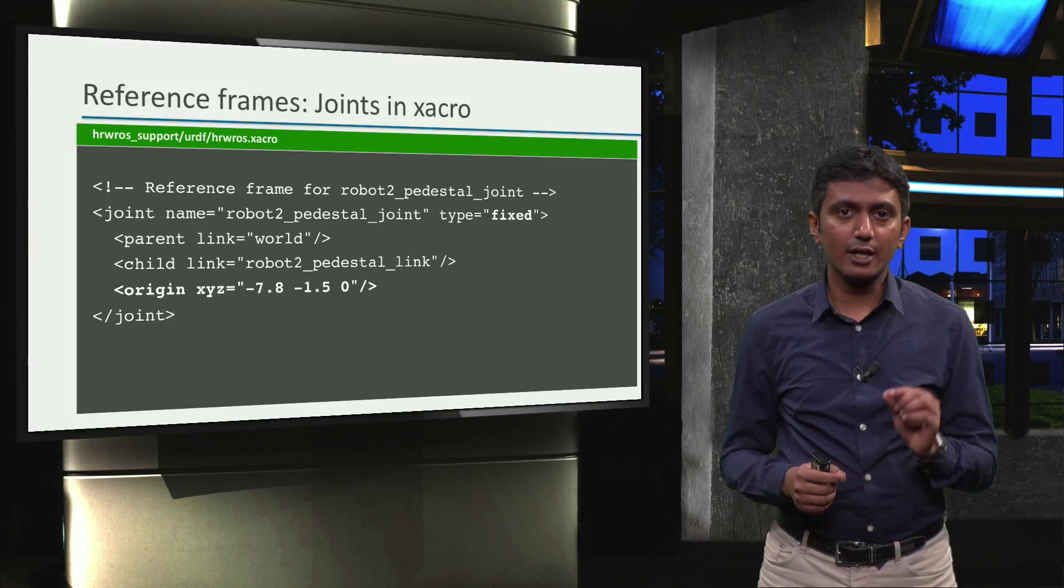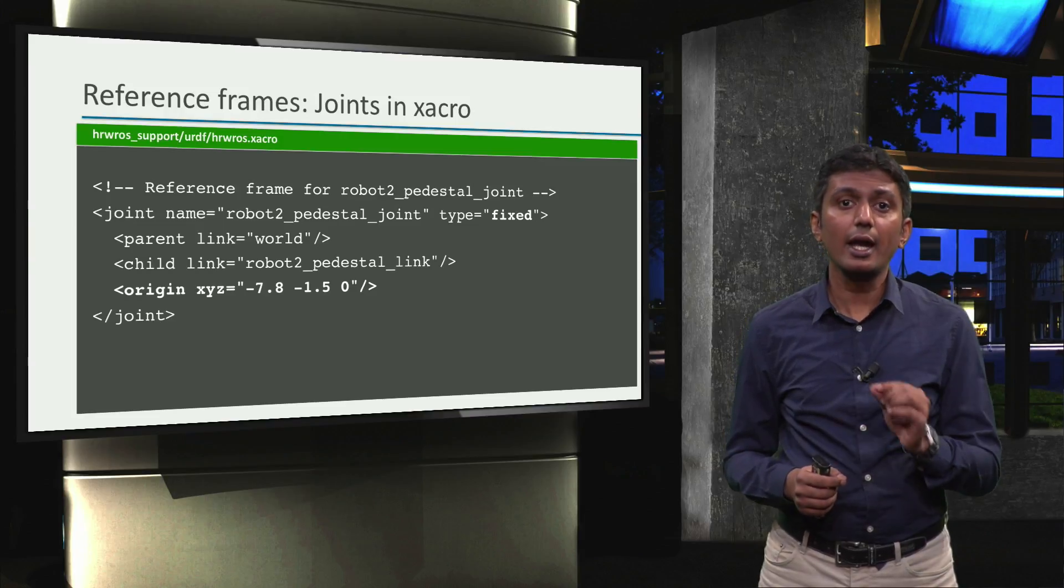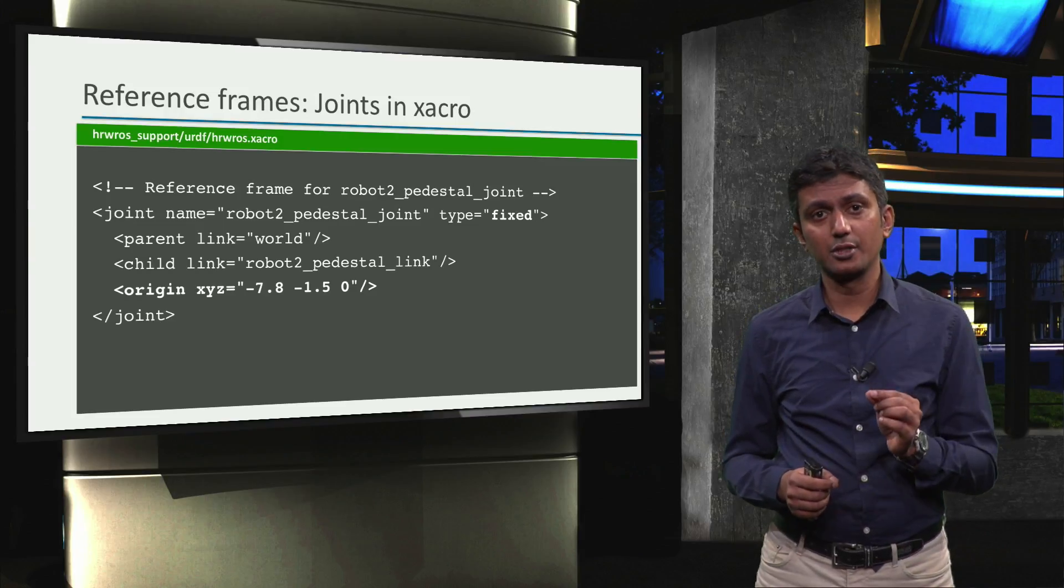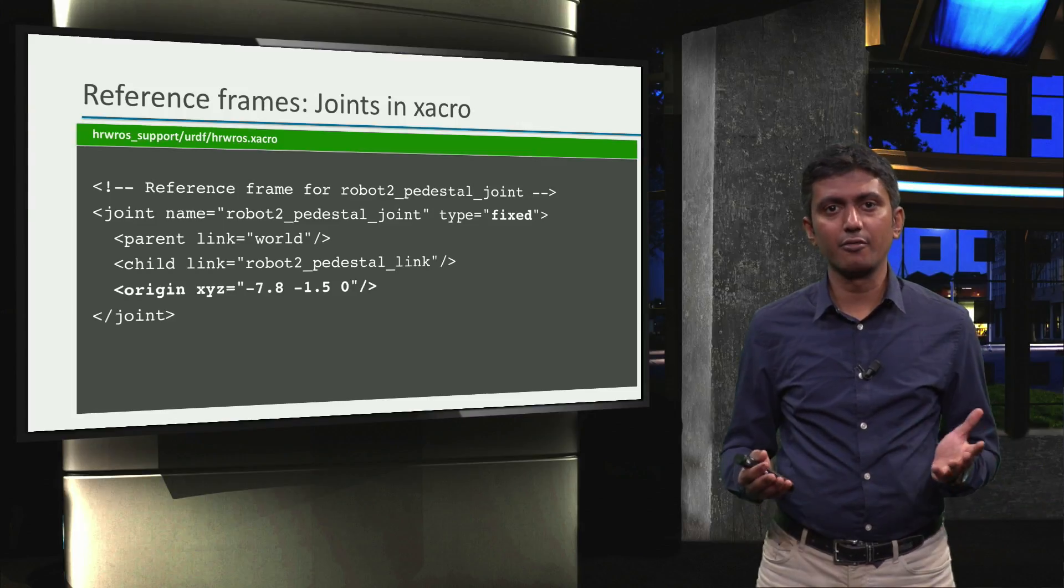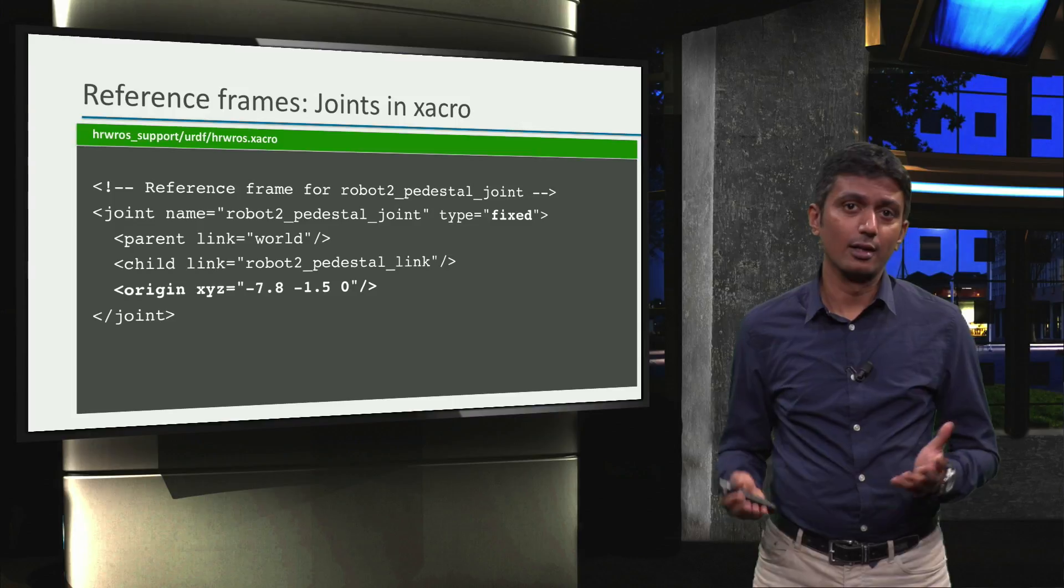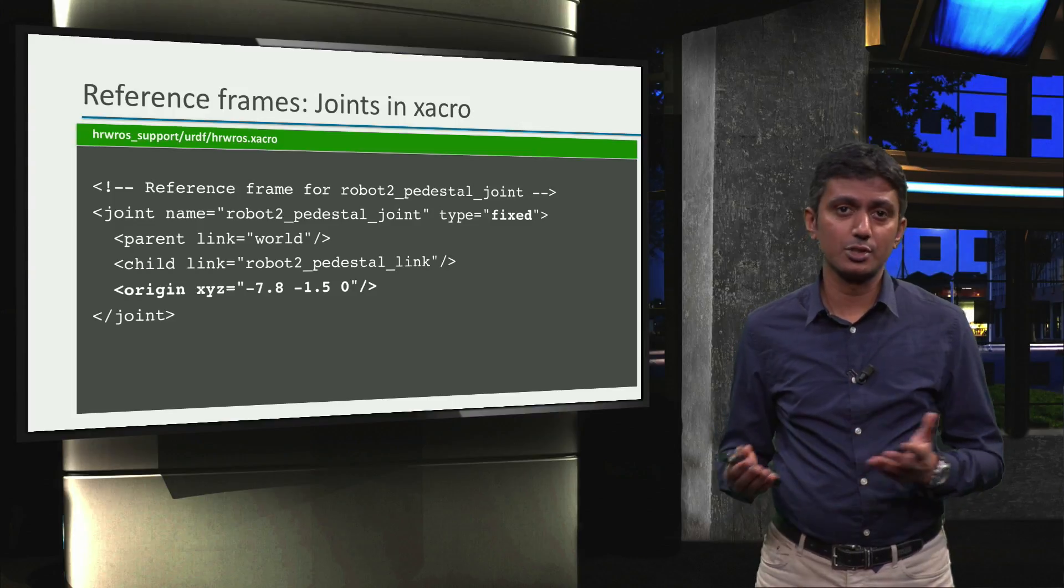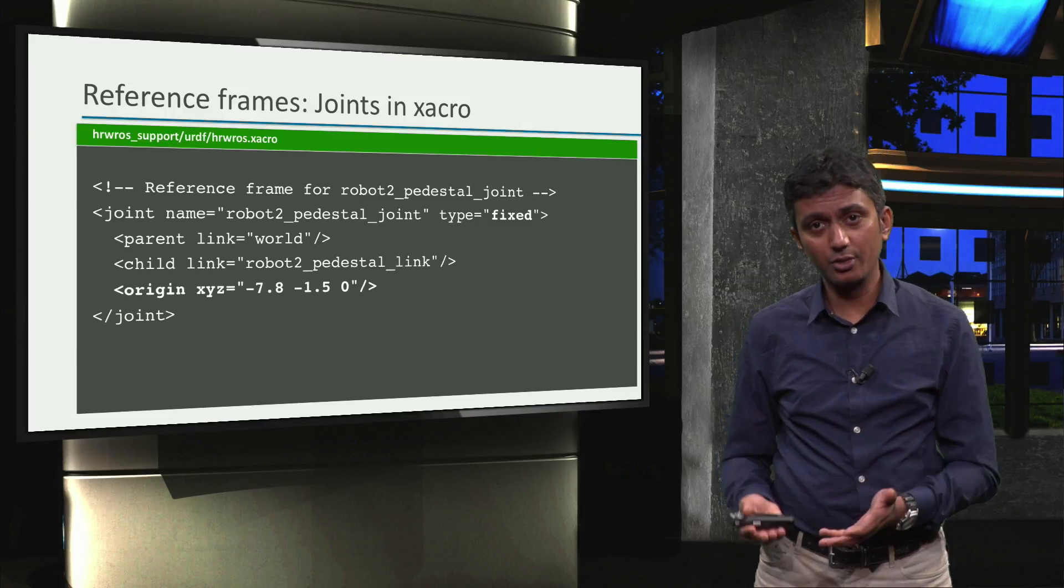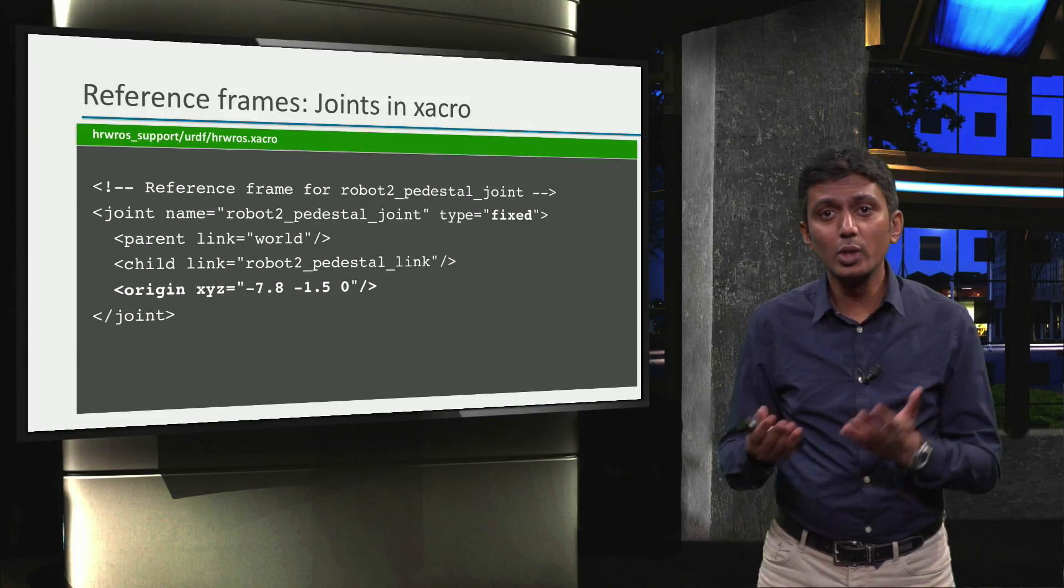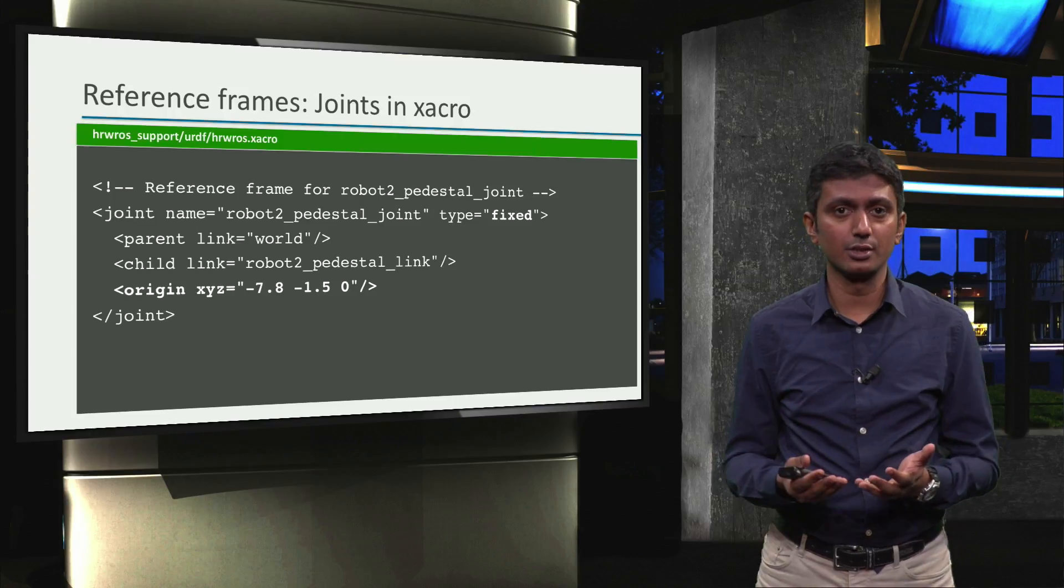Recall that TF helps us to maintain and inspect relative information between objects in our world. And objects are defined via links. And links are connected to each other via joints. That's why the TF frames are defined at joint origins so that we know how two links are located relative to each other.